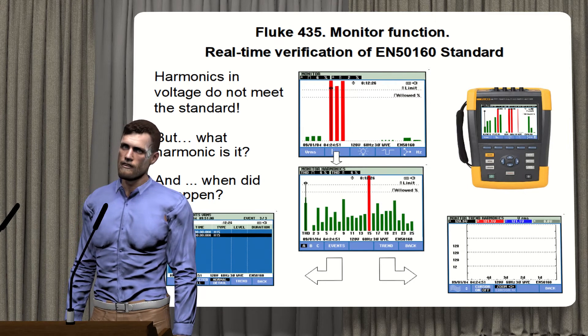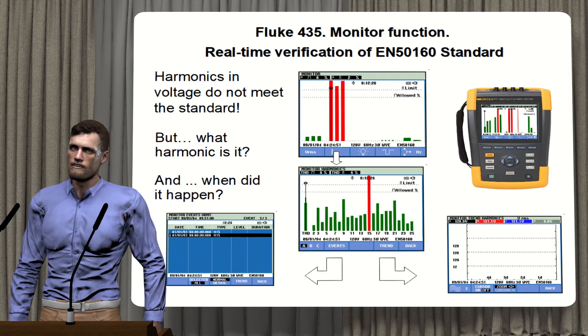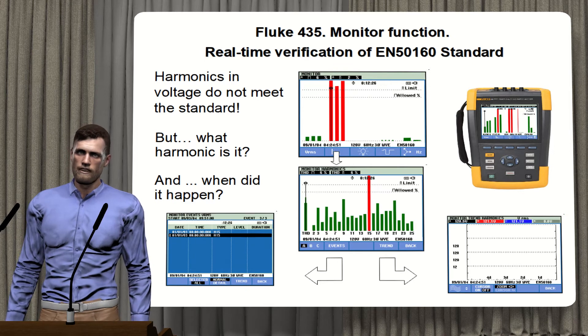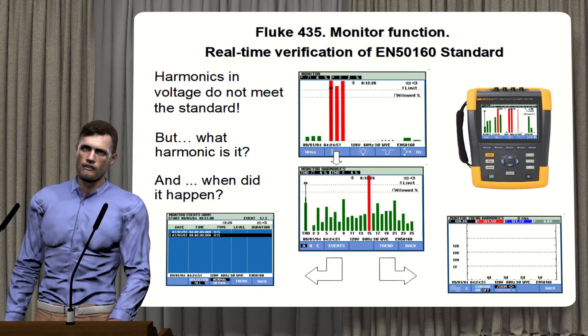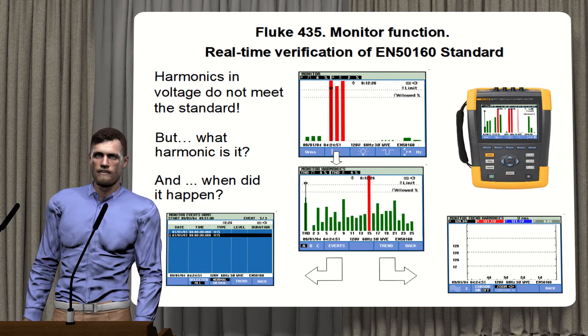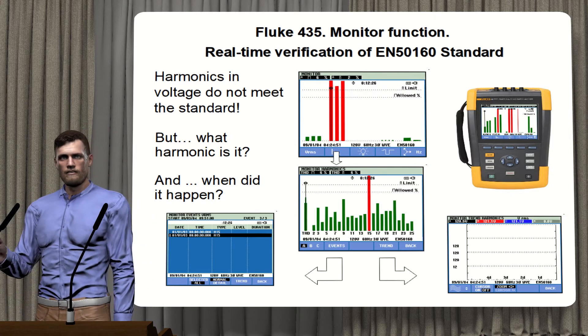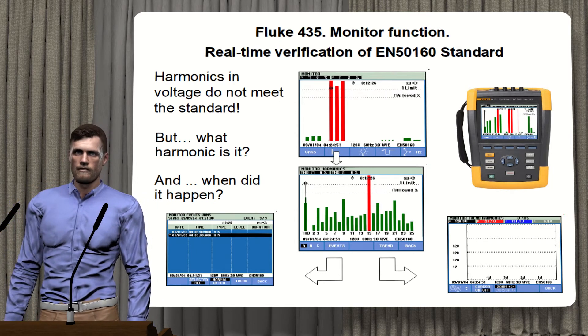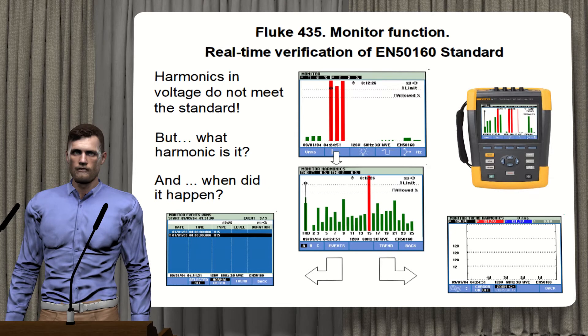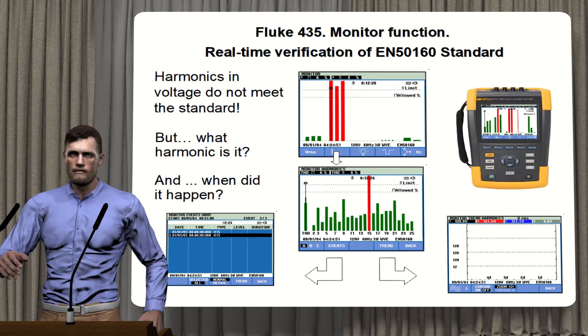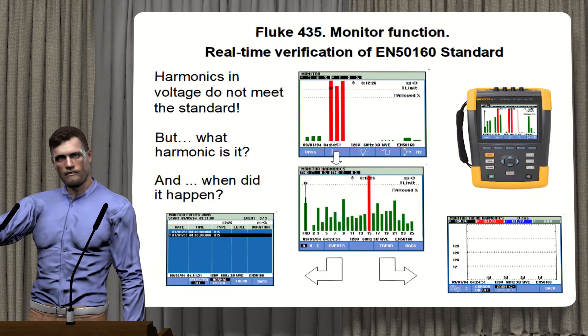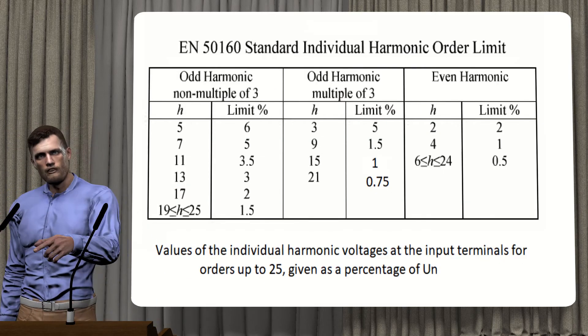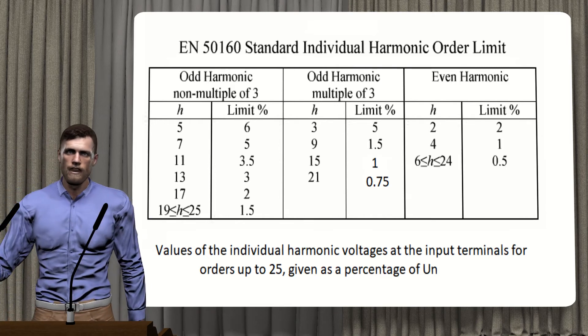The Fluke 435, 1738 and 1748 have the N5160 standard memorized, thus allowing a simple automatic verification of the measurements obtained according to this standard. This can be done through the monitor function that these analyzers incorporate, allowing a graphical view of compliance with the standard and generating a report via software. Thanks to this function, we can not only determine if the THD value is acceptable, but also the value of each voltage harmonic, since these analyzers also have memorized the limit established by the N5160 standard for each voltage harmonic.